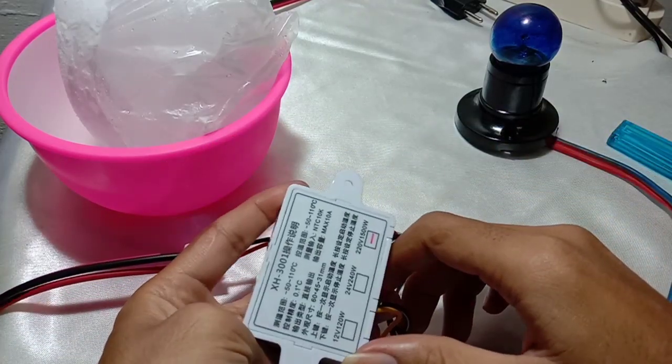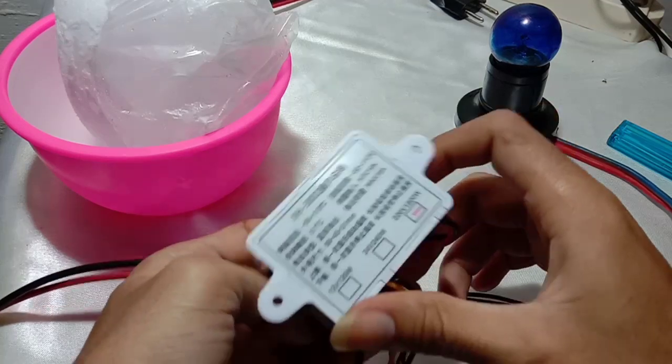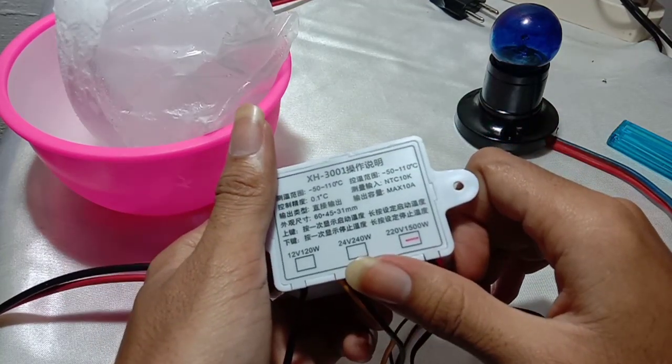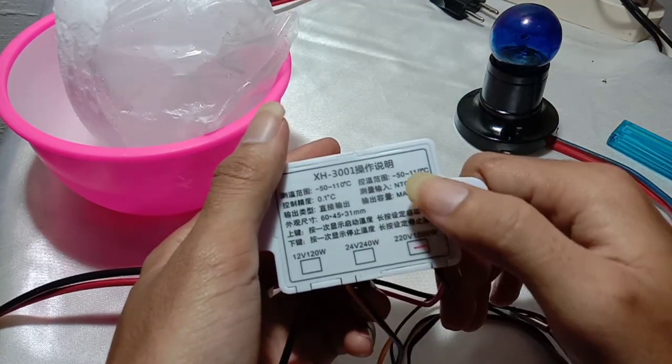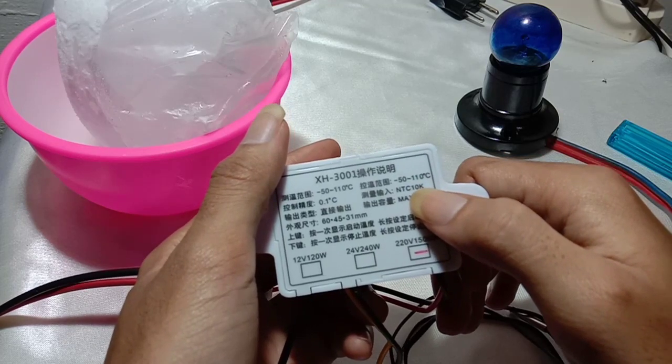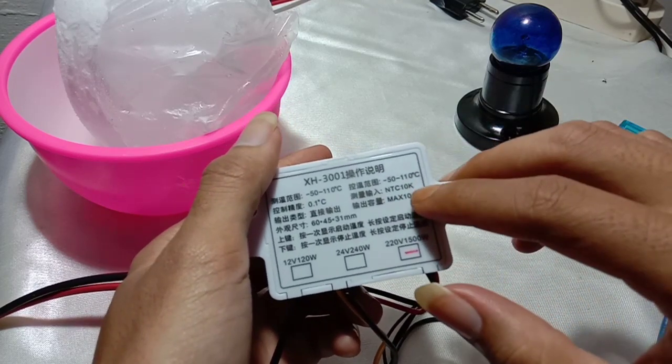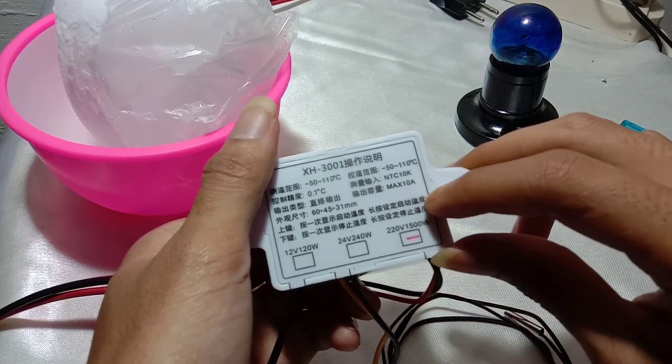You can see over here the sensor wire is NTC 10k and then the maximum ampere is 10 ampere.